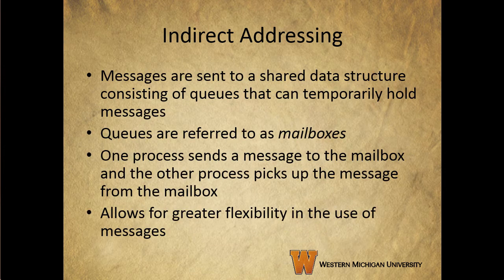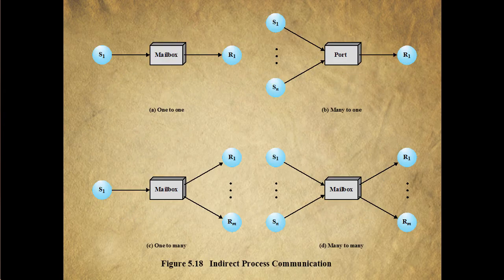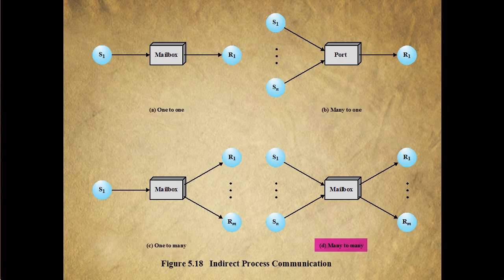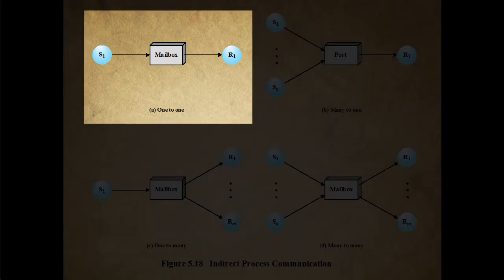With indirect addressing, messages are sent to a shared data structure consisting of a queue, or queues, that can temporarily hold messages. These queues are generally referred to as mailboxes, and one process sends a message to the mailbox. By decoupling the addressing from individual processes, we can allow for greater flexibility in the use of messaging. There are four different relationships between senders and receivers when using indirect addressing: one-to-one, many-to-one, one-to-many, or many-to-many. In a one-to-one relationship, we can allow for a private communication link to be set up between two processes, which insulates the interaction from erroneous interference from other processes.